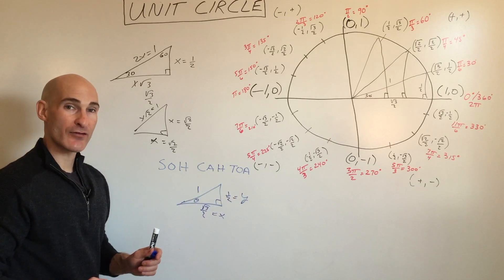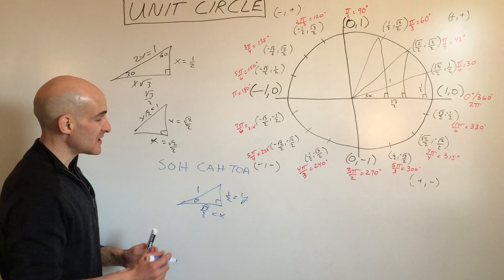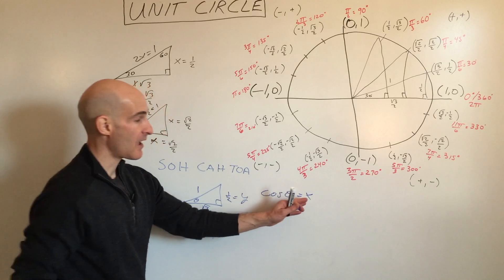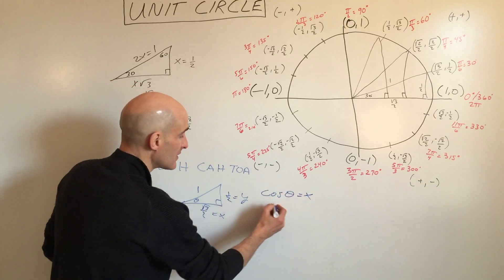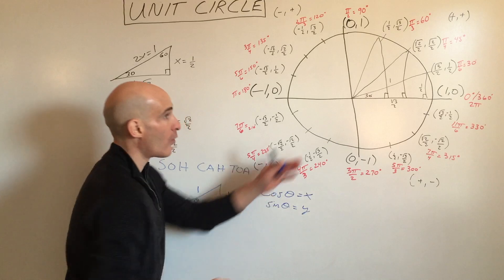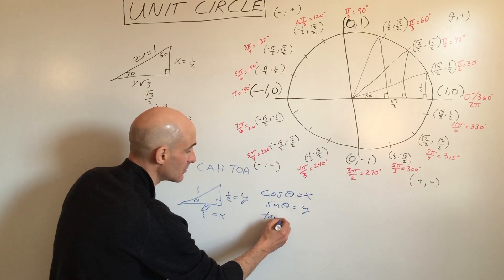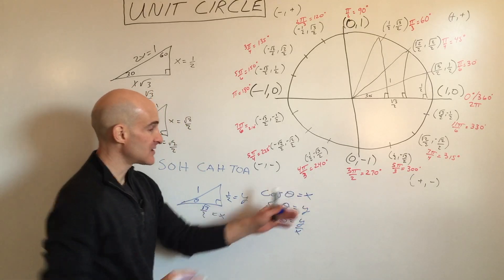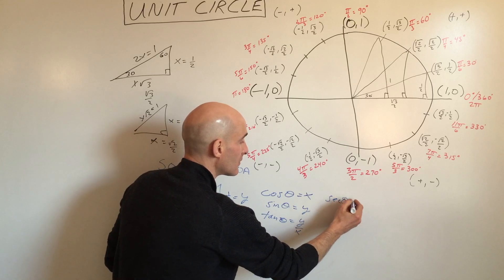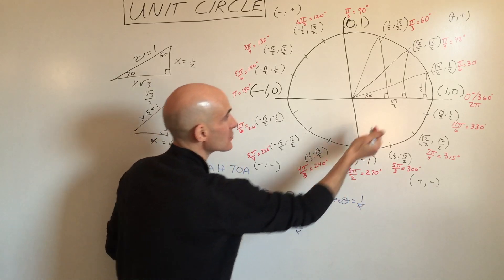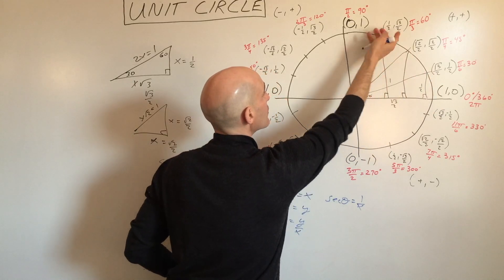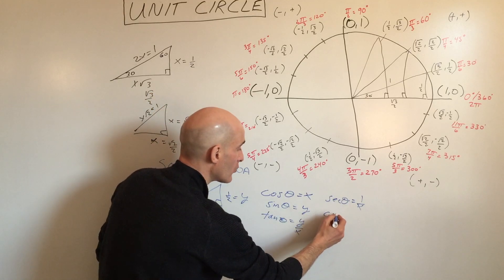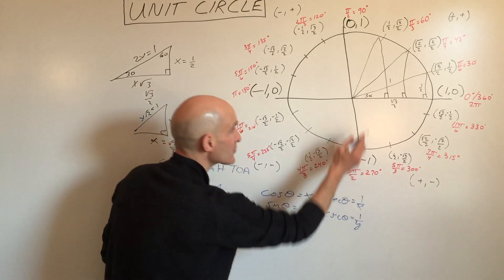On the unit circle, cosine is the x-coordinate, sine is the y-coordinate, and tangent is y over x. Taking it further, secant is 1 over x — so if you're at a point on the unit circle, the secant is just the reciprocal of the x-coordinate. For example, if x is one-half, the secant would be 2.